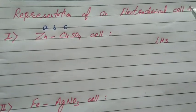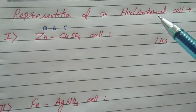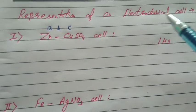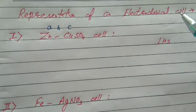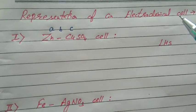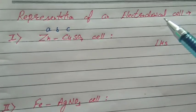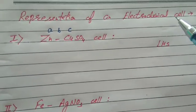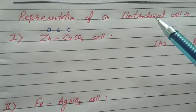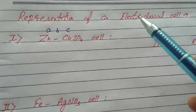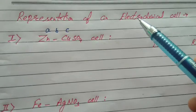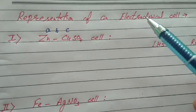Friends, today I am going to tell you how to represent an electrochemical cell. That's the electrochemistry portion of Plus Two standard. Electrochemical cell, galvanic cell — devices in which chemical energy is converted into electrical energy by indirect redox reaction.